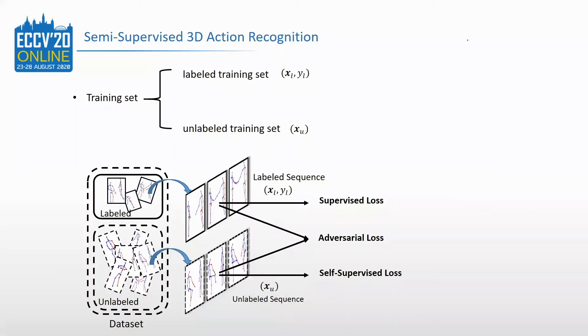Instead of relying on many labels in fully-supervised methods, we use only a few labeled data in semi-supervised 3D action recognition. It learns from a training set that includes both labeled and unlabeled data. This task aims at using unlabeled data to capture more discriminative motion features.